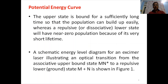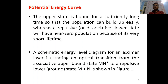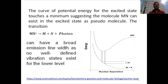We have seen a schematic energy level diagram for an excimer laser illustrating an optical transition from the associative upper bound state MN star to a repulsive lower state M plus N. Although M plus M equals M2 is the excited dimer and M plus N equals MN is the excited complex, together they are both commercially known simply as excimer lasers. From the excited state MN star, dissociation occurs in the ground state to M plus N and a photon — this photon is the laser output.